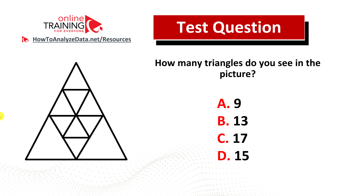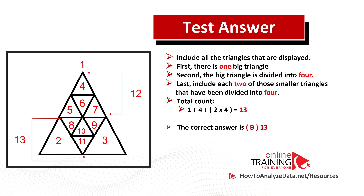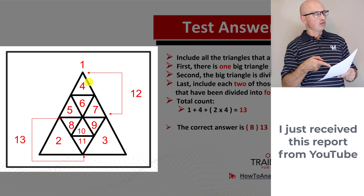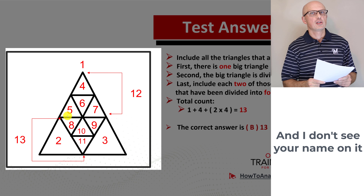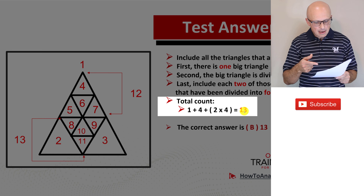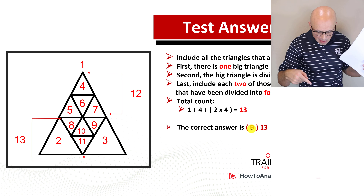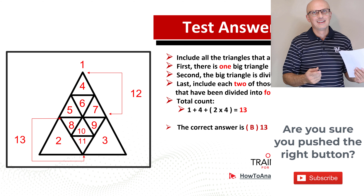Did you come up with the solution? Let me walk you through the process of counting triangles. First, include the largest outside triangle. Second, include smaller triangles — since the large triangle was divided into 4, we include smaller triangles counted as 2 and 3. Then include each of the very small triangles: 4, 5, 6, 7, 8, 9, 10, 11. As a last step, include remaining smaller triangles not counted before: 12 and 13. The correct answer is 1 plus 4 plus 2 groups of 4, equaling 13 — choice B. The key is to make sure you don't miss any triangles.